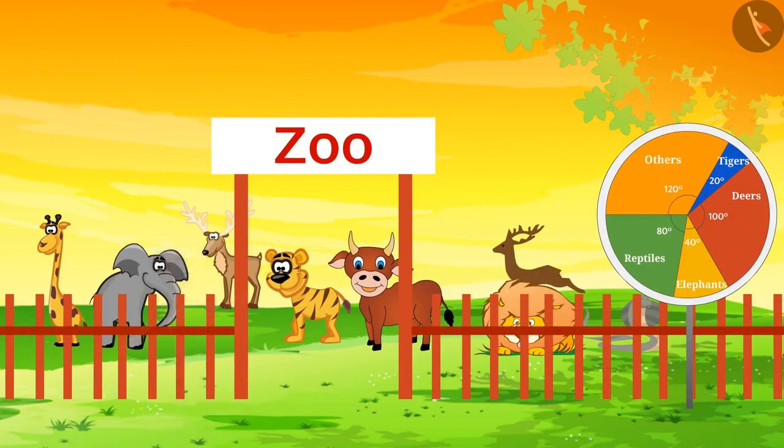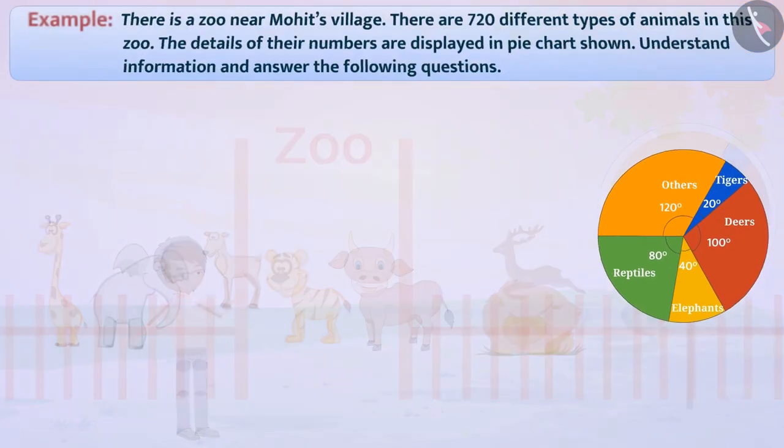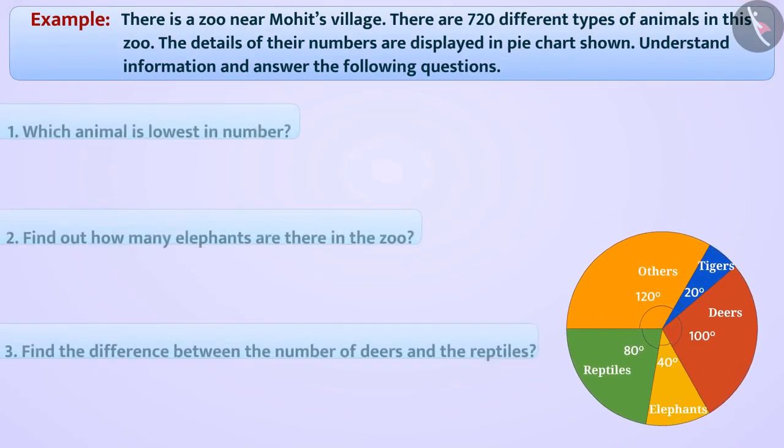There is a zoo near Mohit's village. There are 720 different types of animals in the zoo. The details of their numbers are displayed in the pie chart shown. Understand the information and answer the following questions.